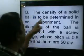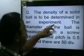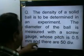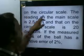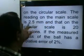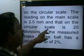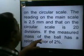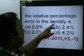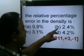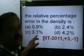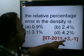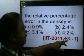The problem: the density of a solid ball is to be determined in an experiment. The diameter of the ball is measured with a screw gauge whose pitch is 0.5 millimeter and there are 50 divisions on the circular scale. The reading on the main scale is 2.5 millimeter and that on the circular scale is 20 divisions. The measured mass of the ball has a relative error of 2 percent. The relative percentage error in density is: (a) 0.9%, (b) 2.4%, (c) 3.1%, (d) 4.2%. This was asked in IIT 2001.